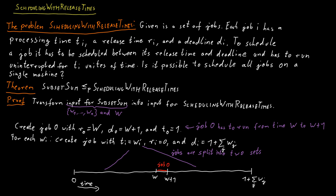So if the answer to the Subset Sum instance is yes, then the answer for our constructed Scheduling with Release Times instance is yes as well. The opposite is also true. If we have a solution for Scheduling with Release Times, job 0 must be placed between time W and W plus 1. We can then look at all the jobs that are scheduled before time W, and we know that the sum of the processing times of that set of jobs has to be exactly W.